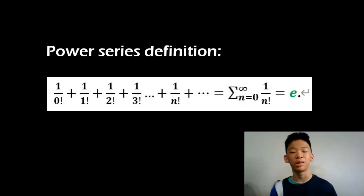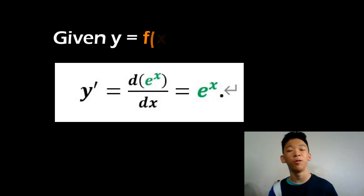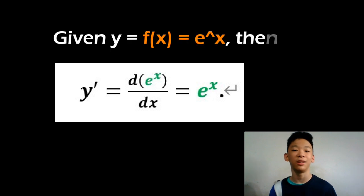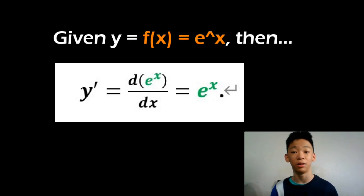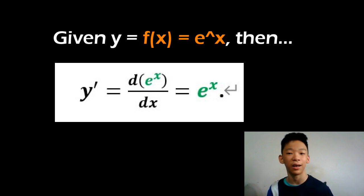It shows up a lot in a power series. The function y equals e to the x is equal to its own derivative — hence y' equals d(e^x)/dx equals e to the x.